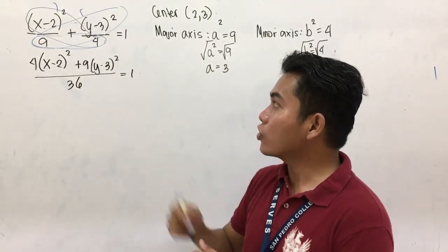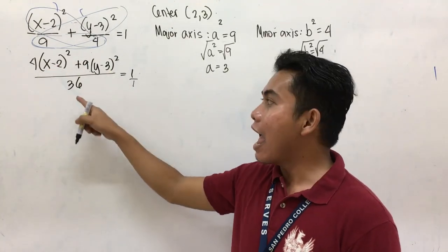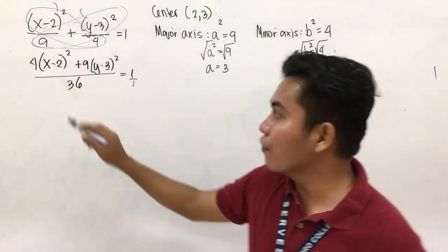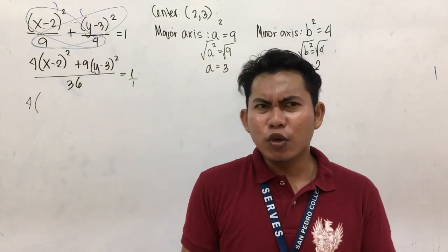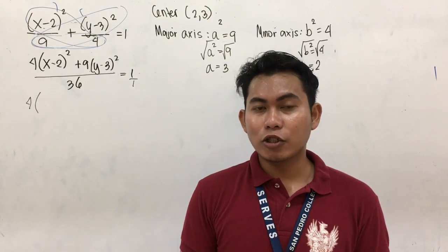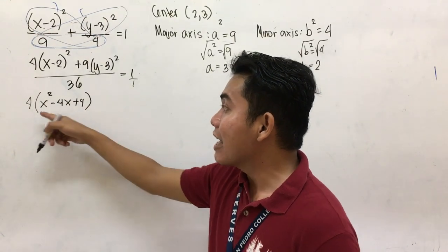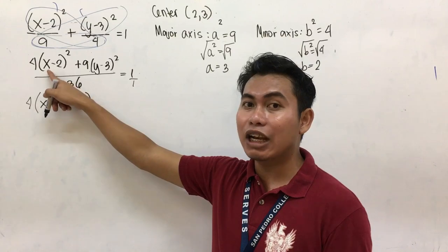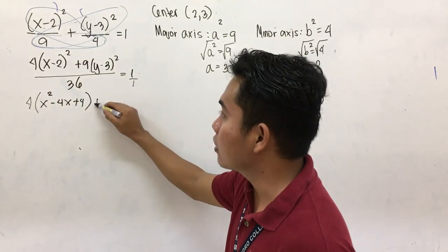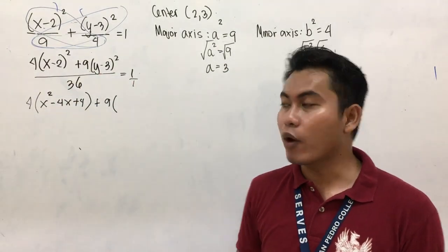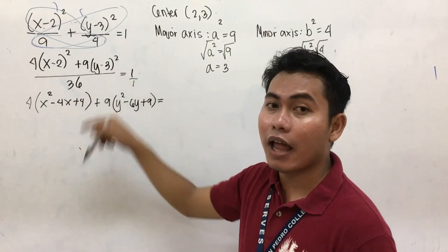You are going to cross multiply and expand this one — expand x minus 2 squared and y minus 3 squared. You can use the FOIL method or binomial expansion. So you have 4 times (x squared minus 4x plus 4), plus 9 times the expanded form of y minus 3 squared, which is (y squared minus 6y plus 9), equal to 36.